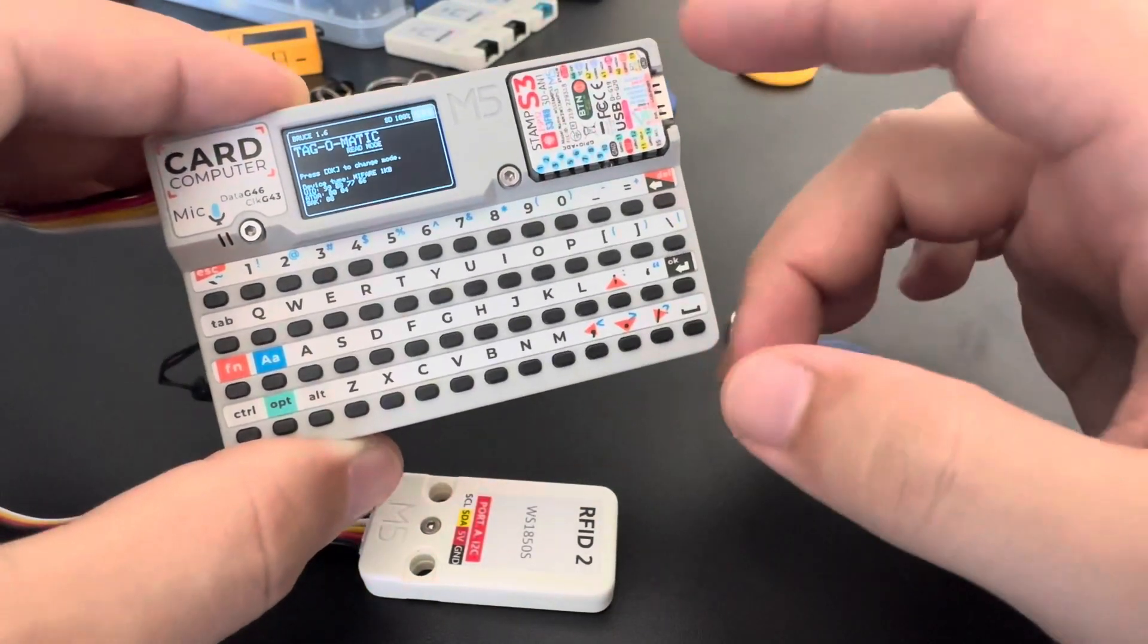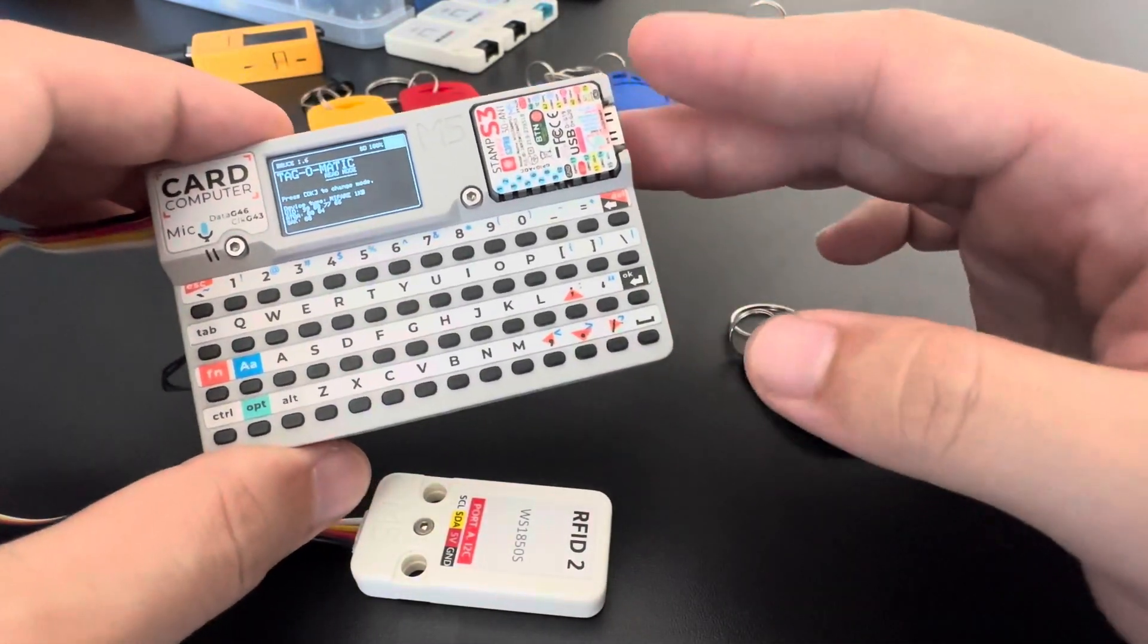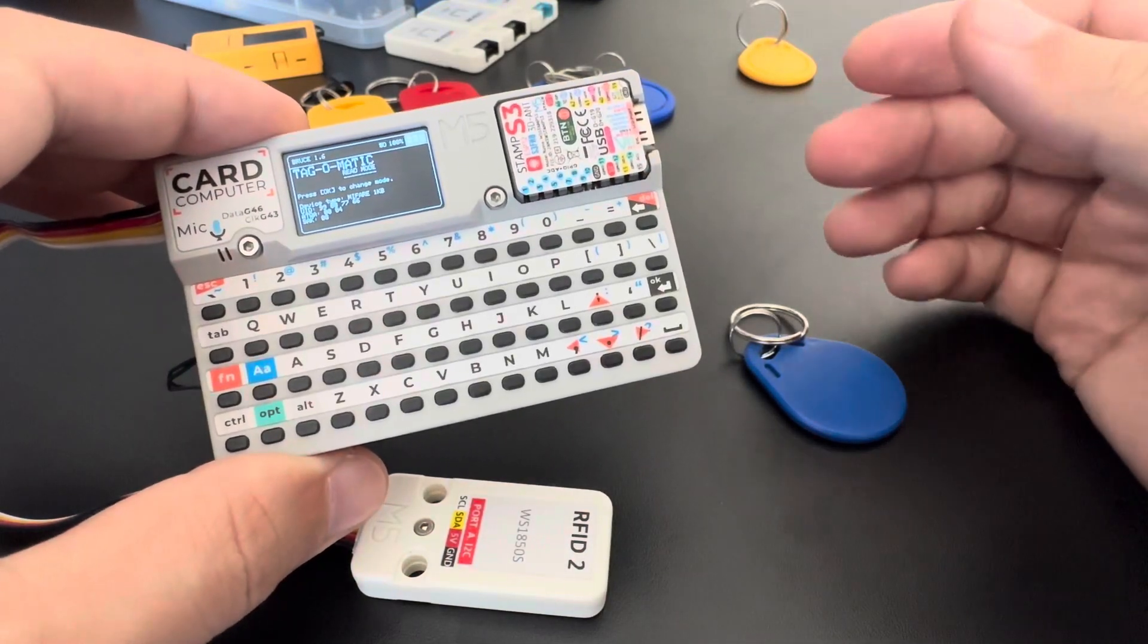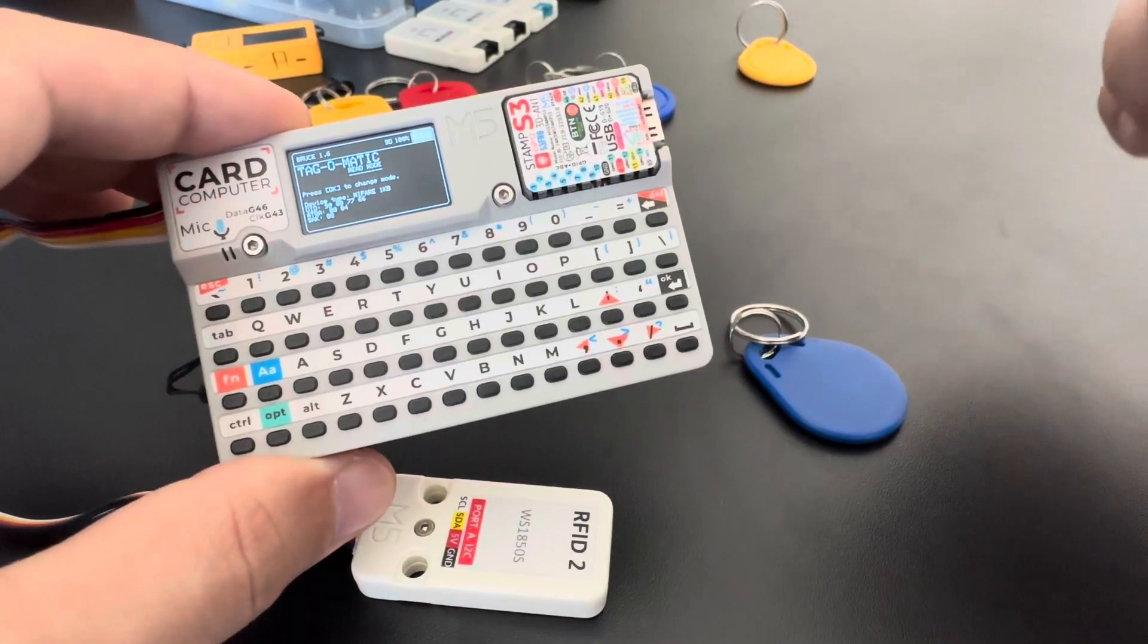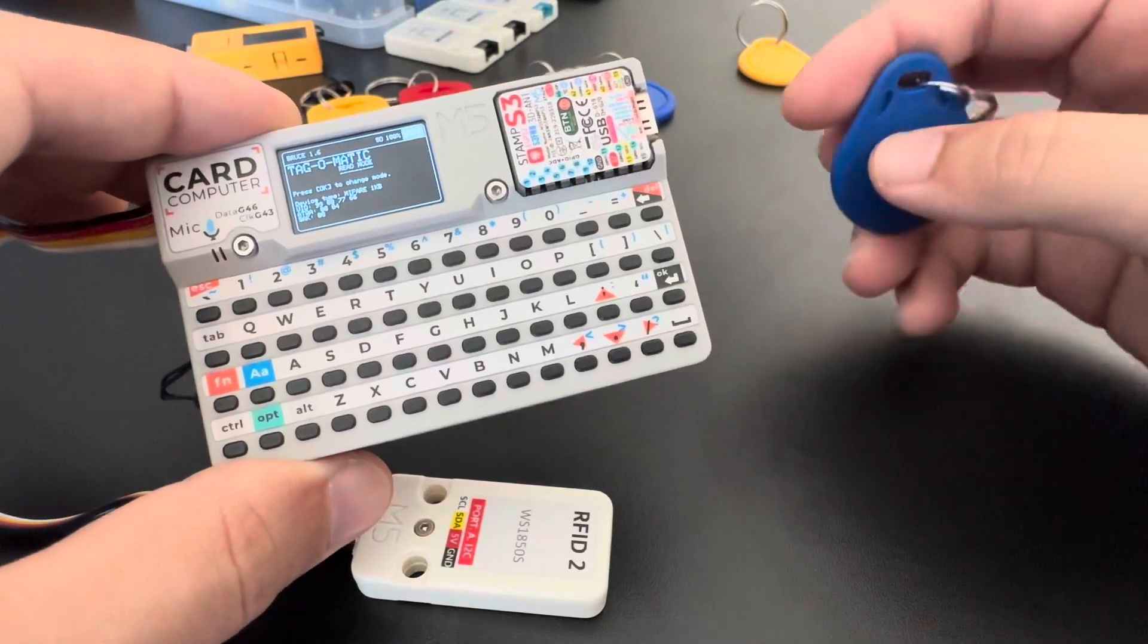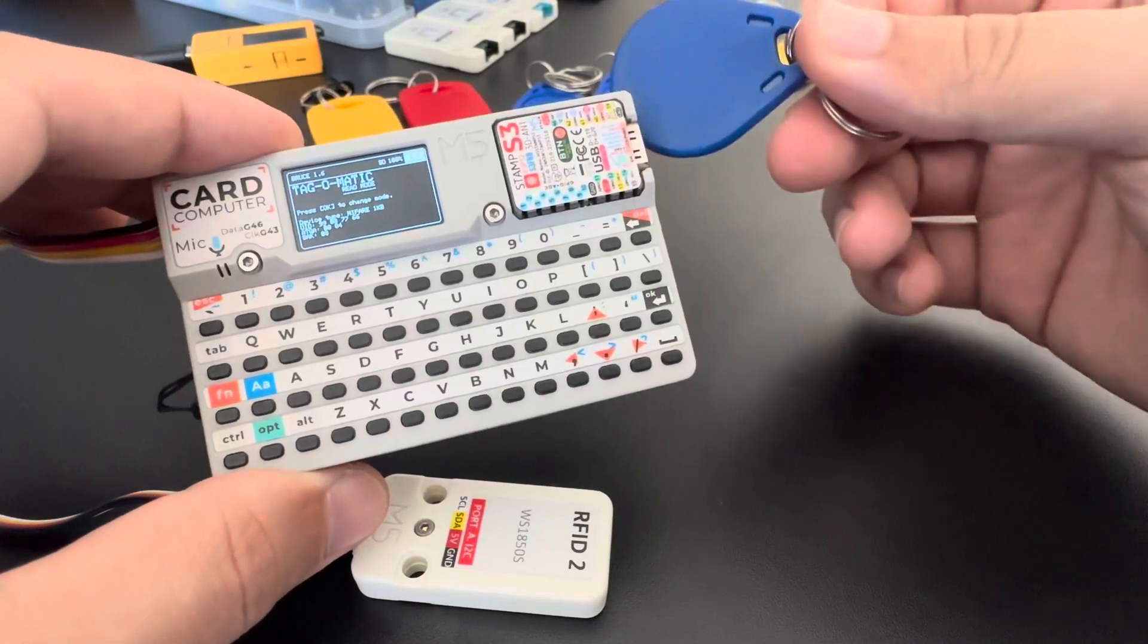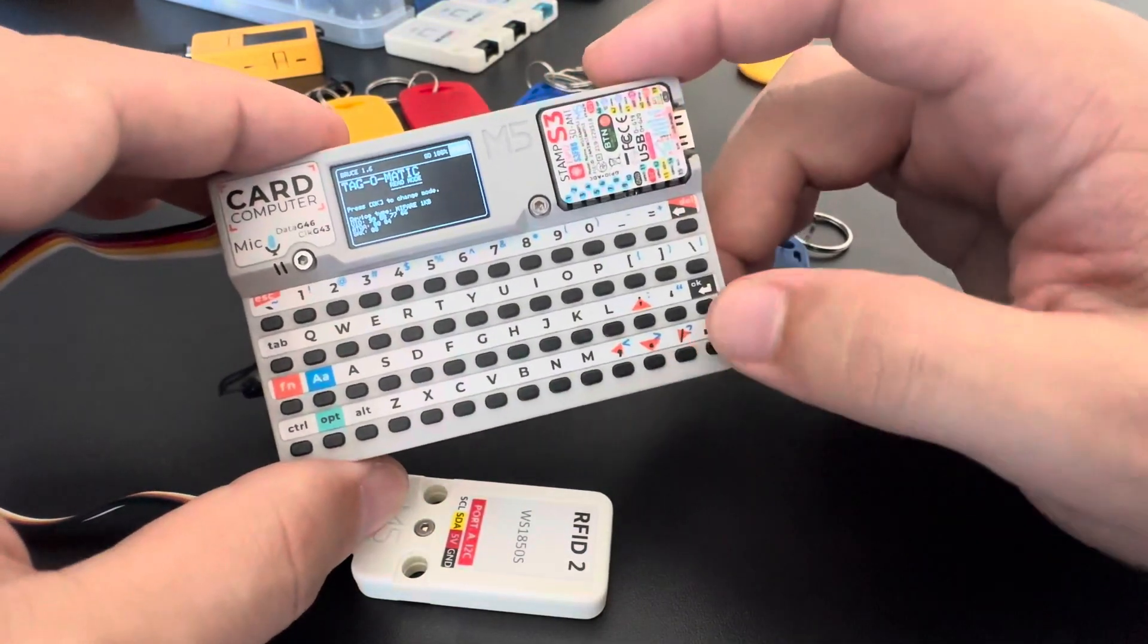OK guys, you can use both functionalities combined. So you can scan multiple tags and check the scan result file. And if you want to emulate one of the scanned tags, you can just grab the UID later and go to custom UID and write this new UID to a tag that you have. OK, thank you guys. See you on the next video. Bye.